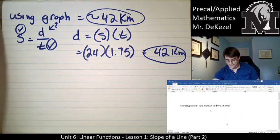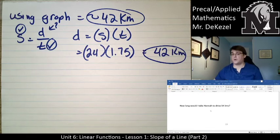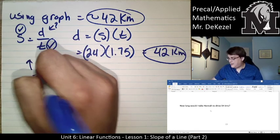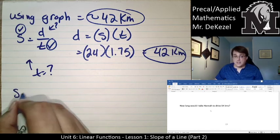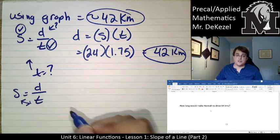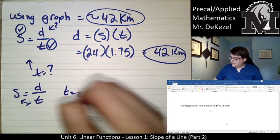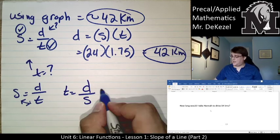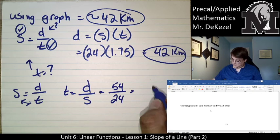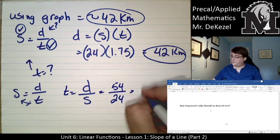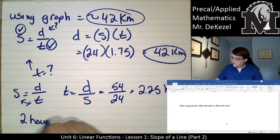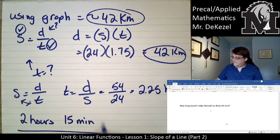The last question there, how long would it take for Hannah to drive 54 kilometers? So we can use the same formula, but this time we're looking for T. That is what we want to know. So speed is equal to distance divided by time. Remember something's on the bottom, we can use our little trick from trigonometry unit and switch them around. So time is equal to distance divided by speed. I know the distance is 54 kilometers given in the question. Speed is 24, so that means the time that it would take to drive 54 kilometers or ride 54 kilometers is 2.25 hours. So we could also say that's 2 hours, 15 minutes.